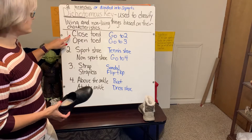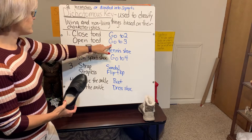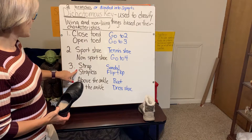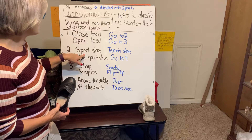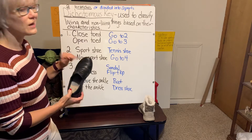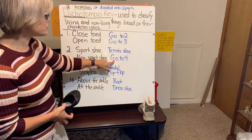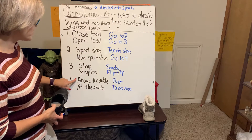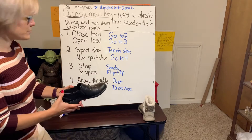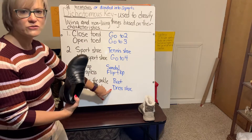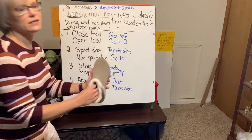Next shoe, starting at the top again: closed-toed or open-toed? This is closed-toed, so I go to number two. Sport shoe or non-sport shoe? I would not want to run in these, so it's a non-sport shoe — I go to number four. Above the ankle or at the ankle? When I slip these on, they come right at my ankle, so this is my dress shoe.